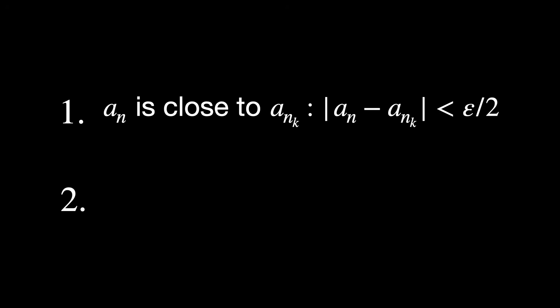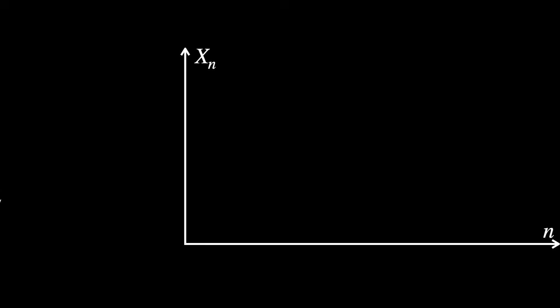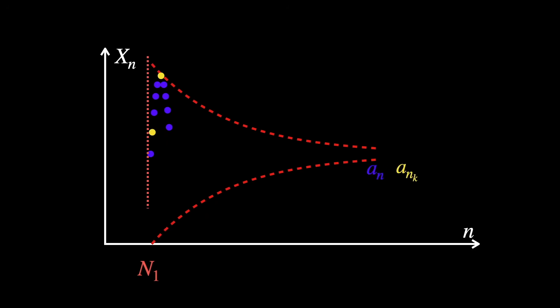a_n is close to the subsequence term a sub n sub k. And that sequence term, a sub n sub k, is close to the limit a, both within one half of epsilon. The fact that the sequence is Cauchy guarantees that a_n and a sub n sub k are close, as long as both of their indices are large enough.